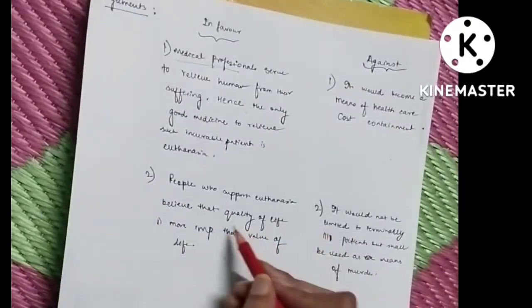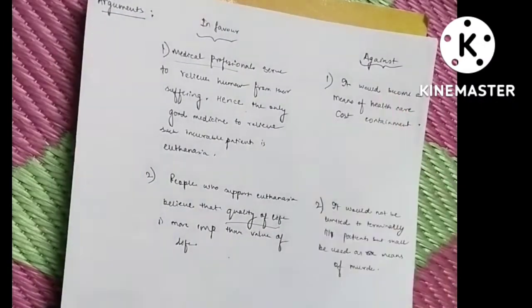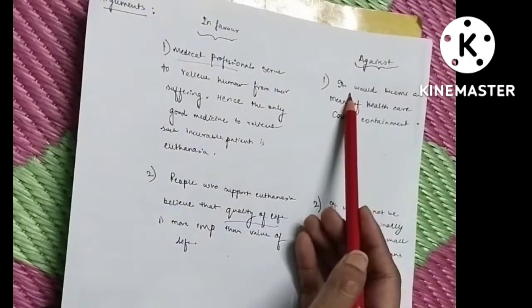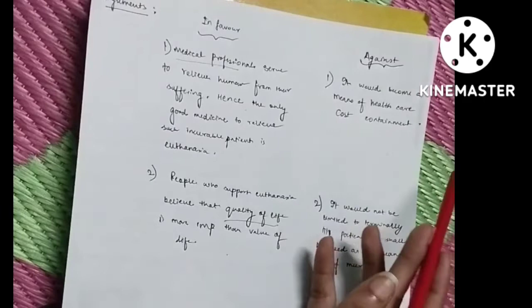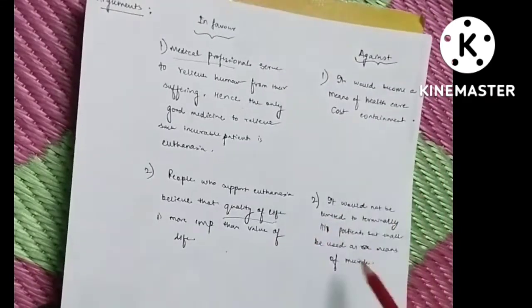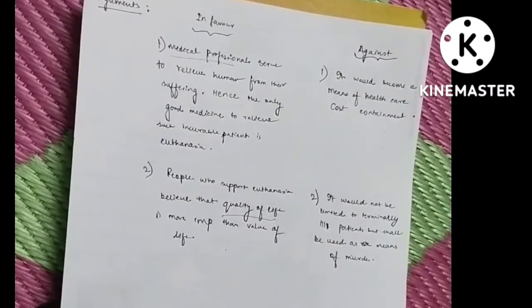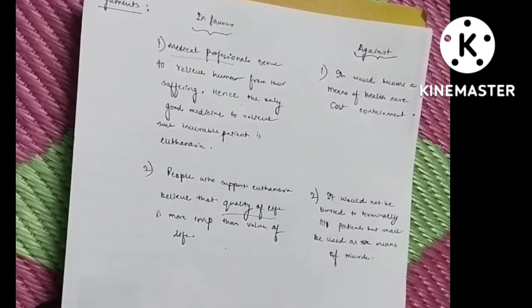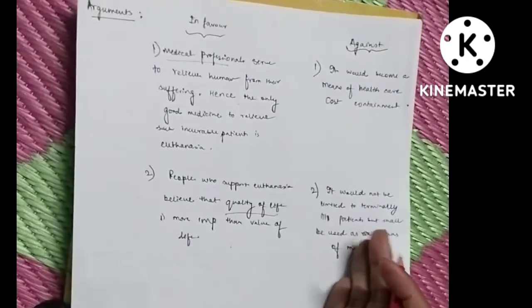Now there are some arguments against euthanasia also. Euthanasia would become a means of health care cost containment. Some people believe that doing euthanasia would mean that there is health care cost containment. And the second point against euthanasia is that some people believe that euthanasia may not be restricted just to terminally ill patients, but it can be used as a weapon or a means to commit murder.